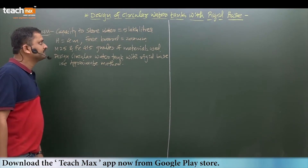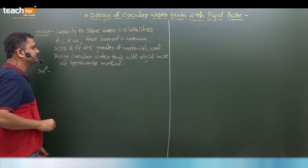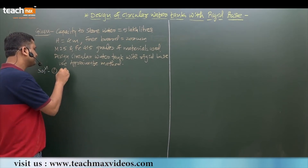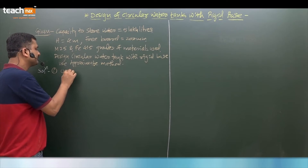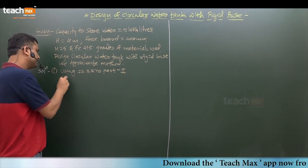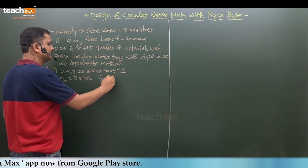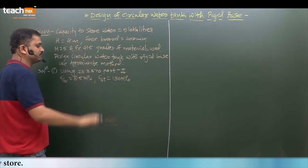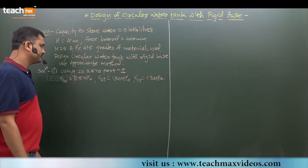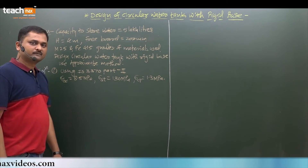In the solution, first we find the permissible values for the materials. Using IS 3370 Part 2, we get sigma_cbc = 8.5 MPa, sigma_st = 130 MPa, and sigma_ct = 1.3 MPa for these grades of material. These values are referred from Table 1, Table 4, and Table 2 of IS 3370 Part 2.